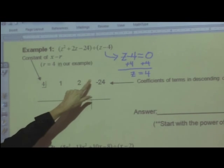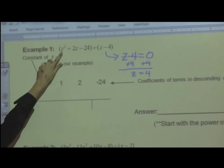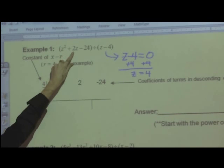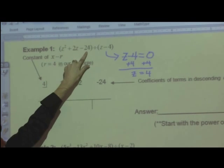Now notice, the one, the two, and the negative 24, those are coming from the original equation up here, z squared plus 2z minus 24. They're the coefficients of each of the terms.